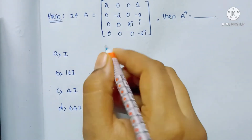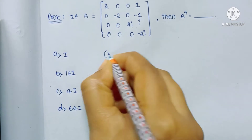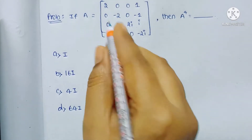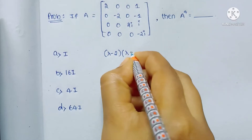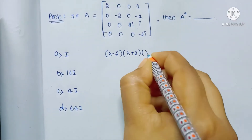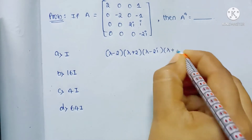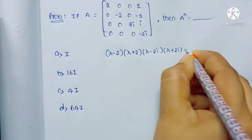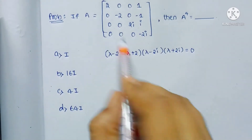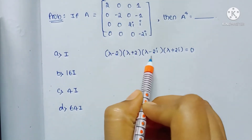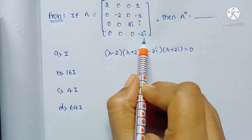So we write the characteristic equation as (λ - 2)(λ + 2)(λ - 2i)(λ + 2i) = 0. Then we get λ = 2, λ = -2, λ = 2i, and λ = -2i.